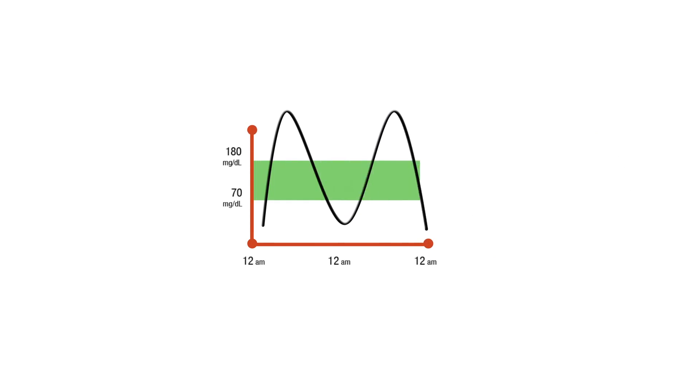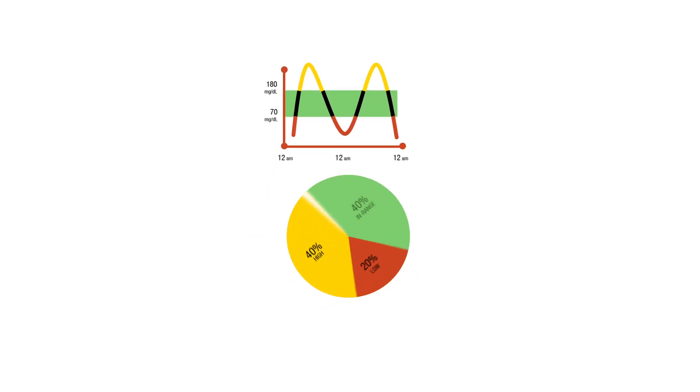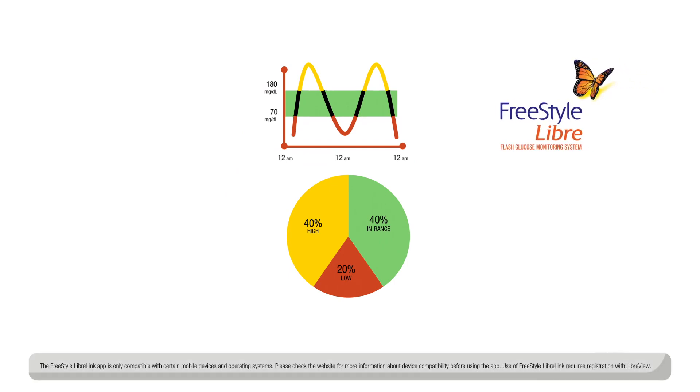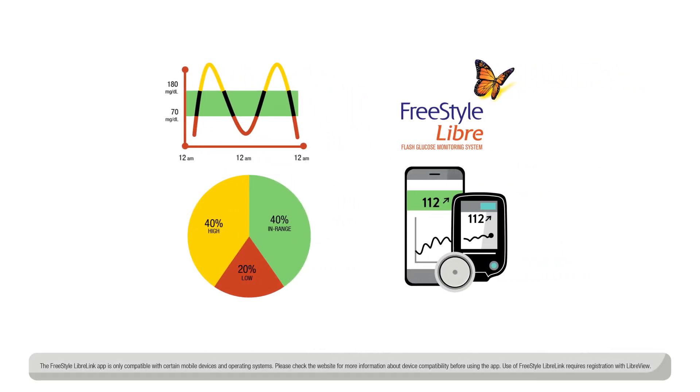Time and Range, or TIR, shows high, low, and in-range glucose information that can be measured with sensor-based glucose monitoring, like the FreeStyle Libre System.